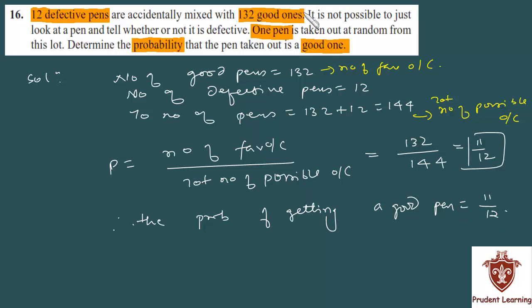In this question, if we ask for the probability that the pen taken out is a defective pen, then the number of favorable outcomes is 12, so our probability would be 12 upon 144.